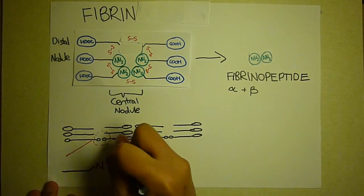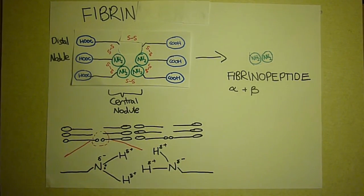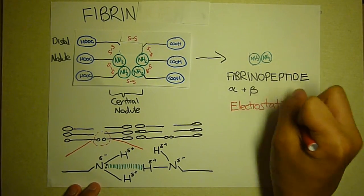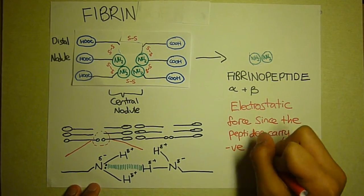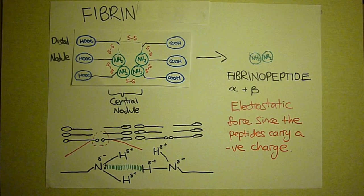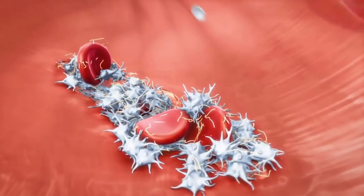Hydrogen bonding and van der Waals forces occur between the distal nodules and between the central and distal nodules, although evidence suggests that electrostatic forces of attraction are also responsible. This forms a mesh-like structure over the platelets.